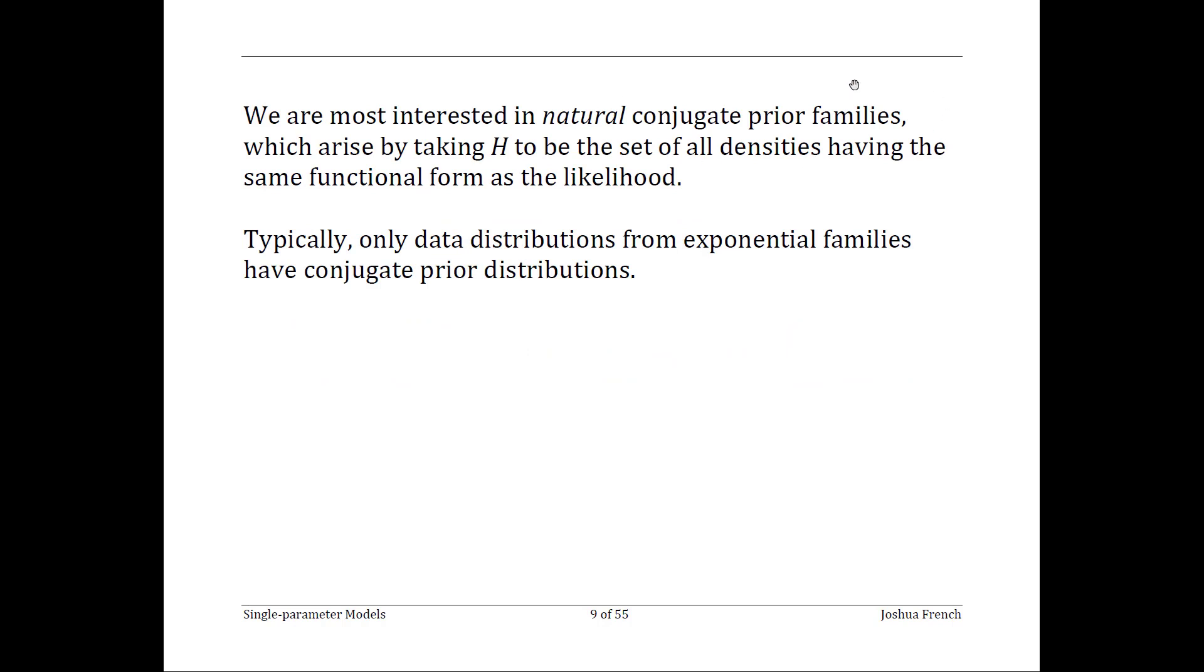Natural conjugate families are families that look a lot like the likelihood function of the data and are usually the kind that we're interested in. Typically, you'll only find conjugate prior distributions for data distributions that are members of an exponential family, which is a broad class of statistical distributions that have a common form which ensures some really nice statistical properties.